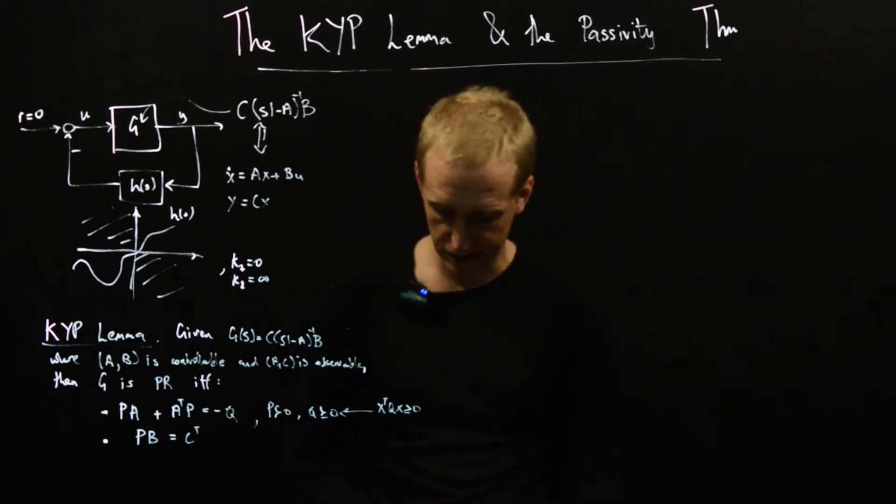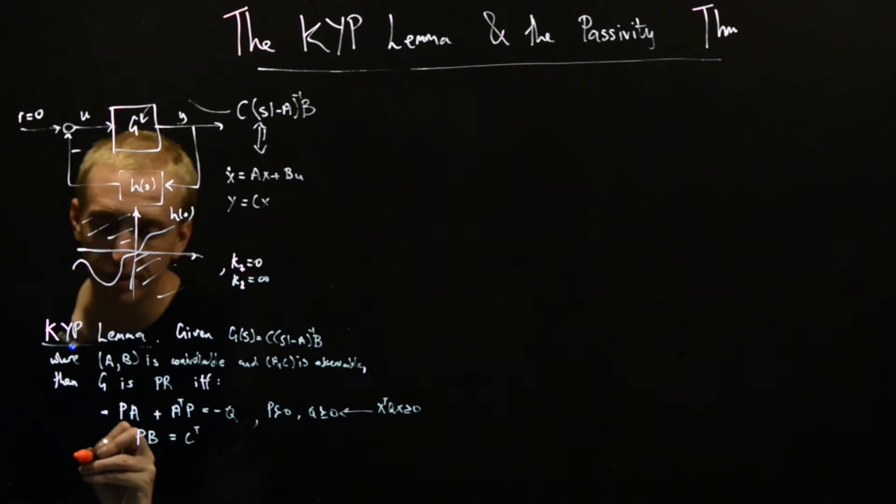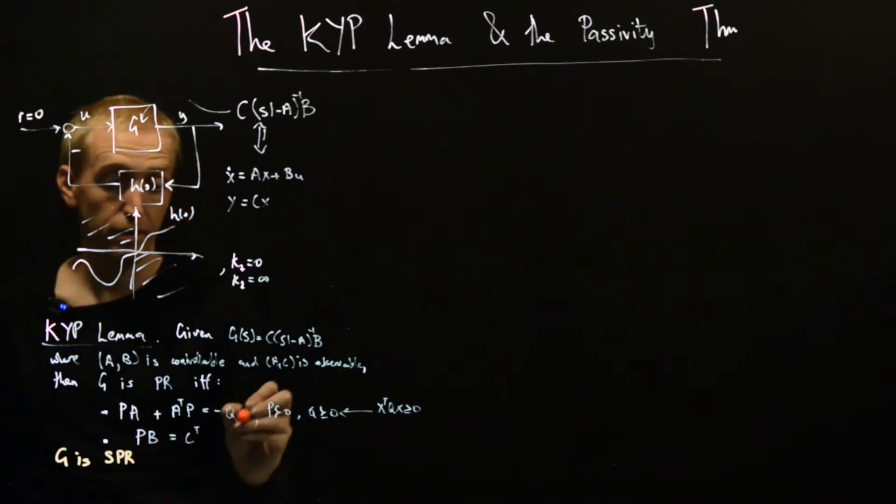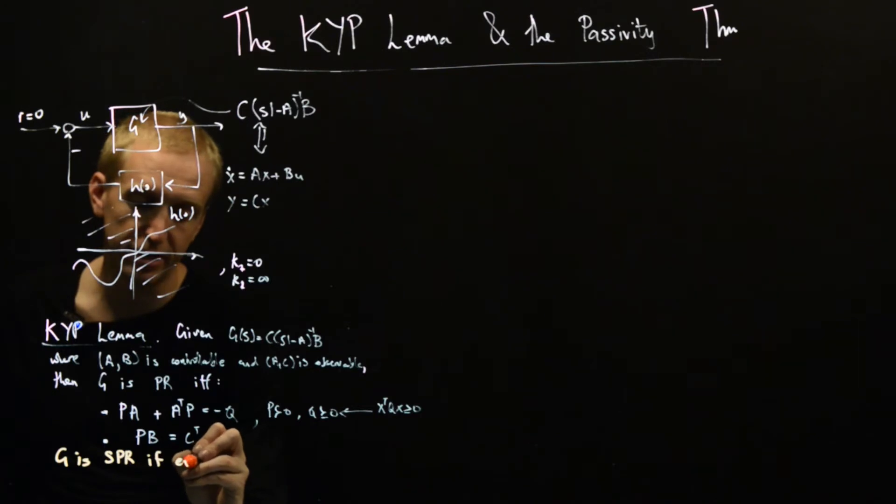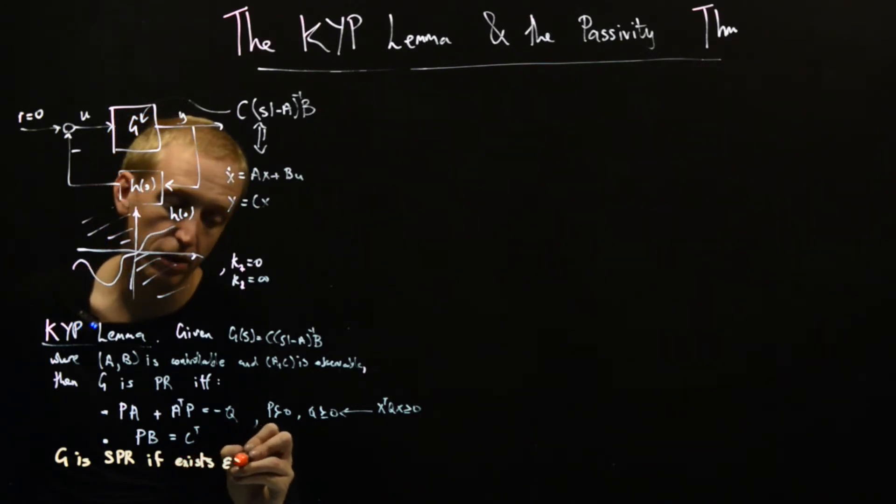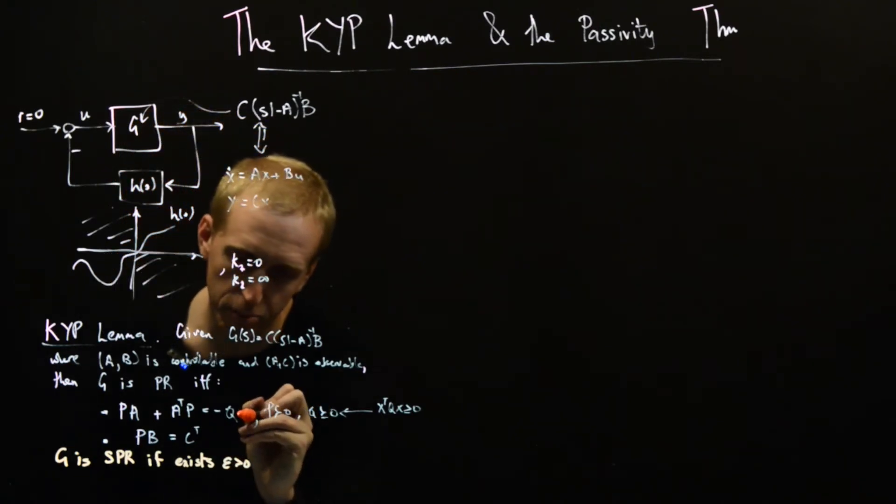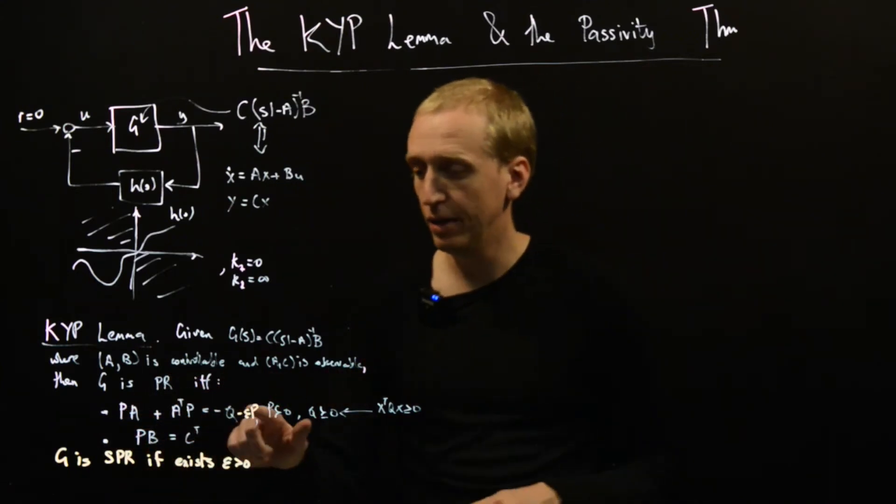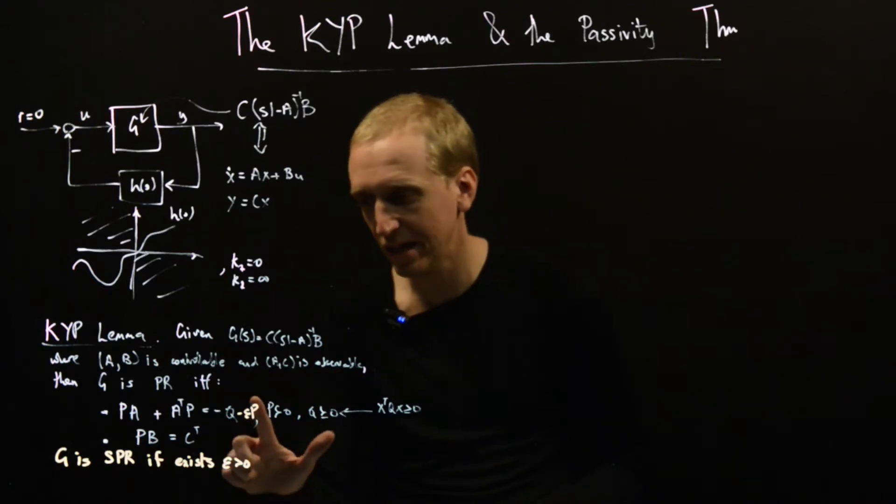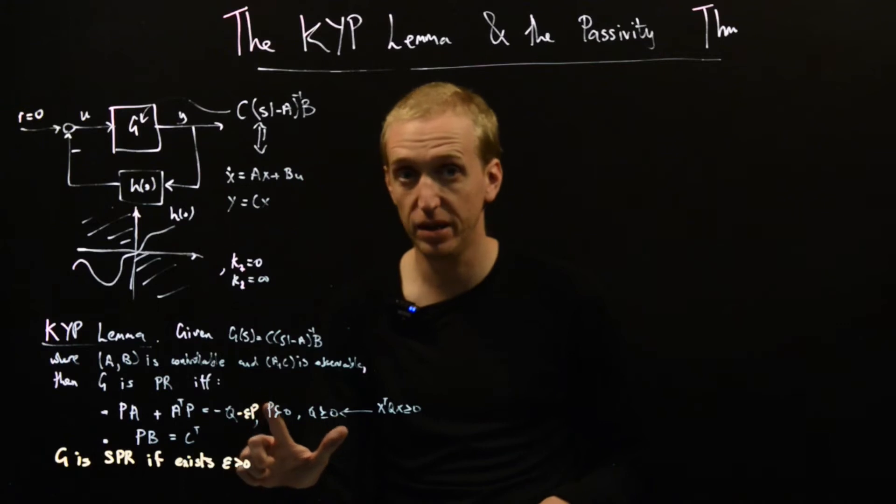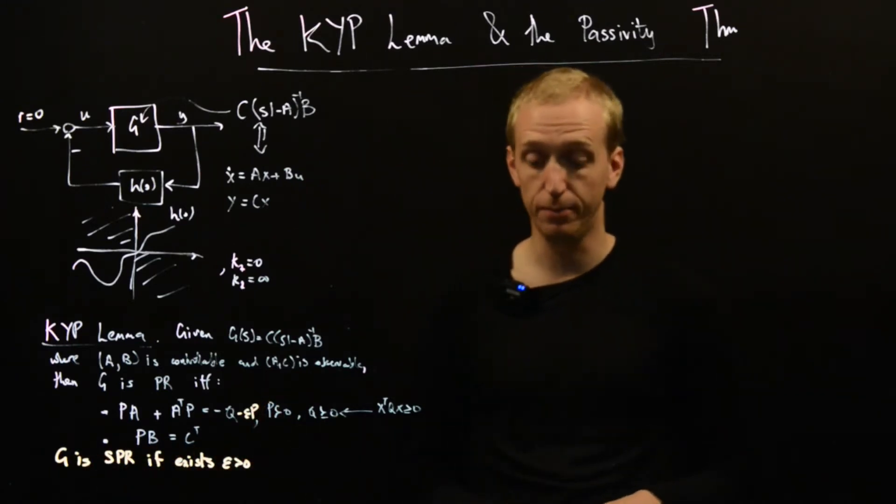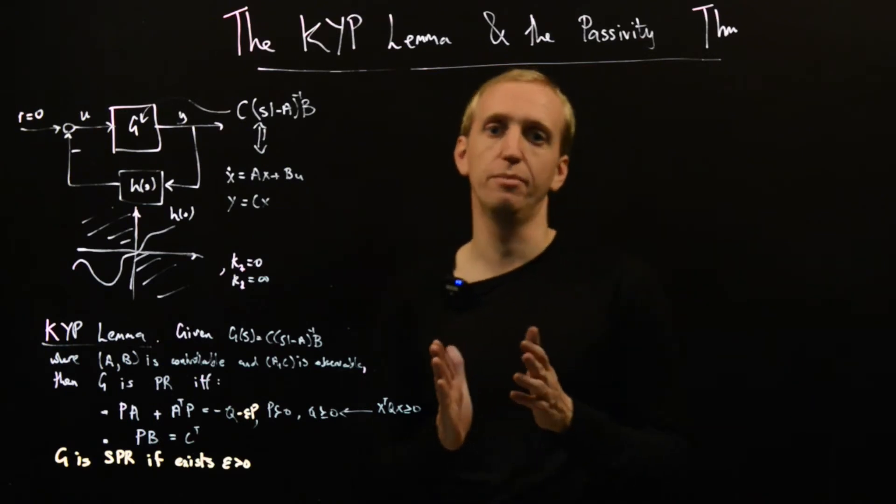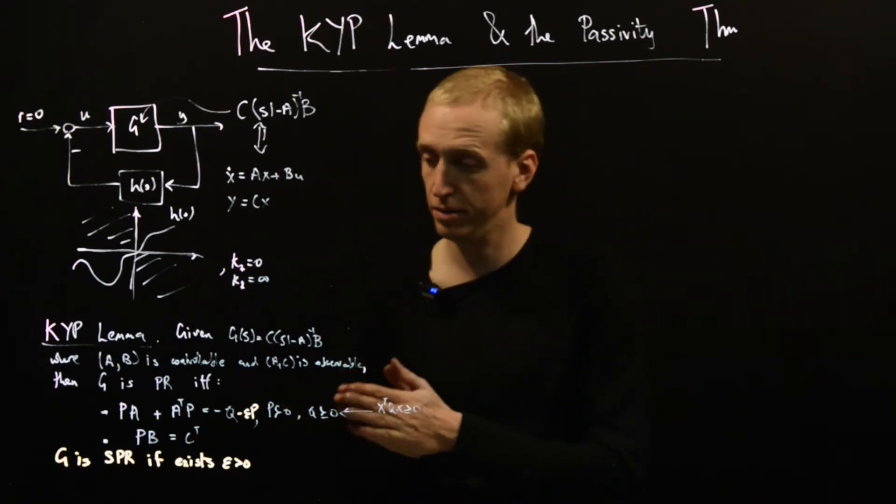Furthermore, G is strictly positive real if there exists an epsilon greater than zero such that I can put a minus epsilon P in here. If we have this slight strengthening where we're able to shove in a tiny amount of our positive definite matrix P in here as well, then the transfer function is strictly positive real. This is slightly more restrictive. In terms of our Nyquist plots, this was preventing them from touching the imaginary axis, whereas positive real ones could touch the imaginary axis.